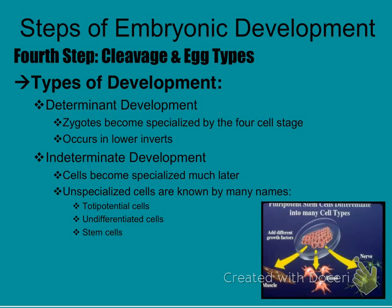There are also two types of development: determinate and indeterminate. In determinate development, cells become specialized by the four-cell stage — they already know exactly what they're going to be in the body. This occurs in lower invertebrates. In indeterminate development, cells become specialized much later; these are what you might know as stem cells — unspecialized cells. This applies to higher invertebrates and vertebrates.